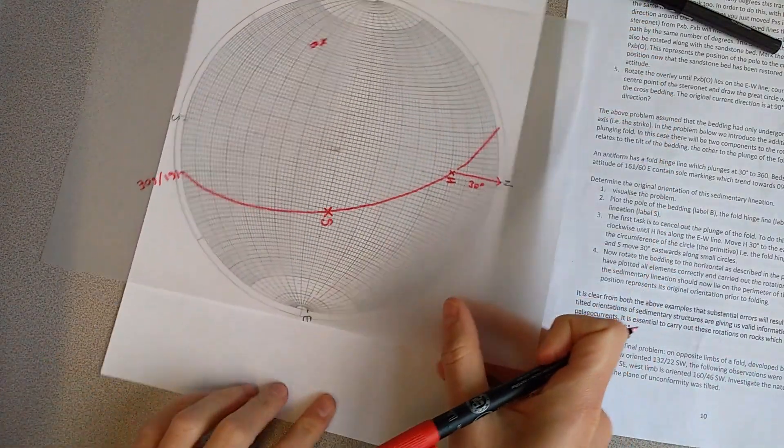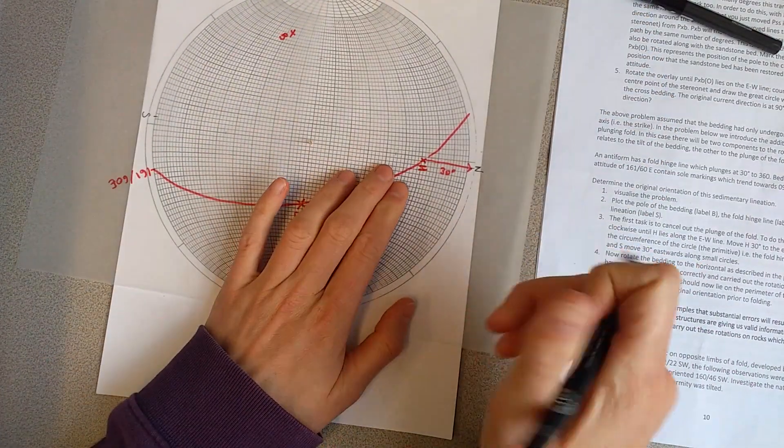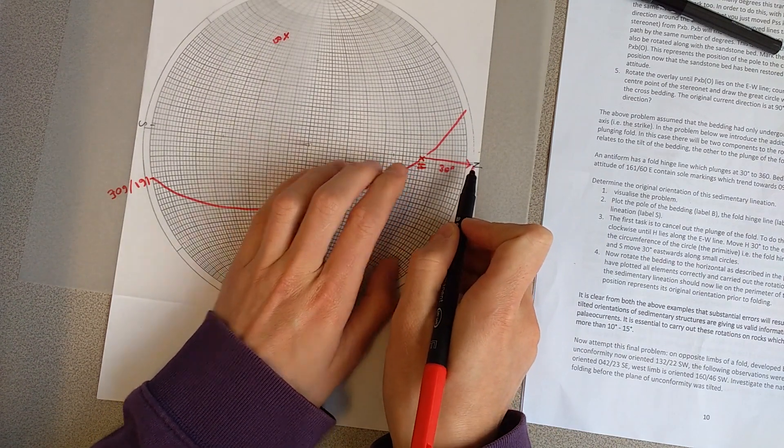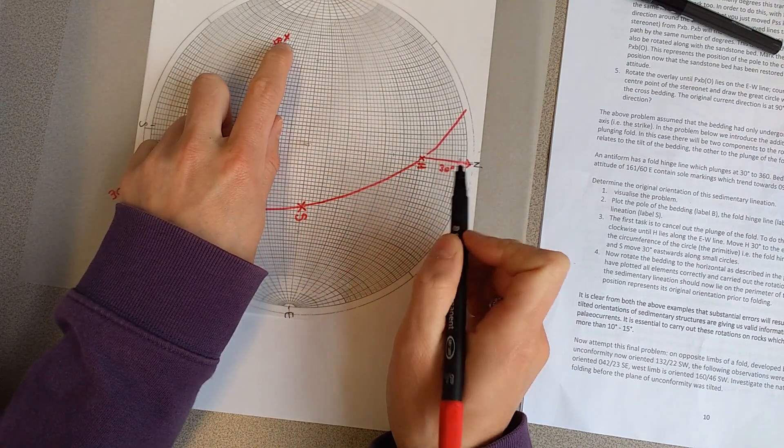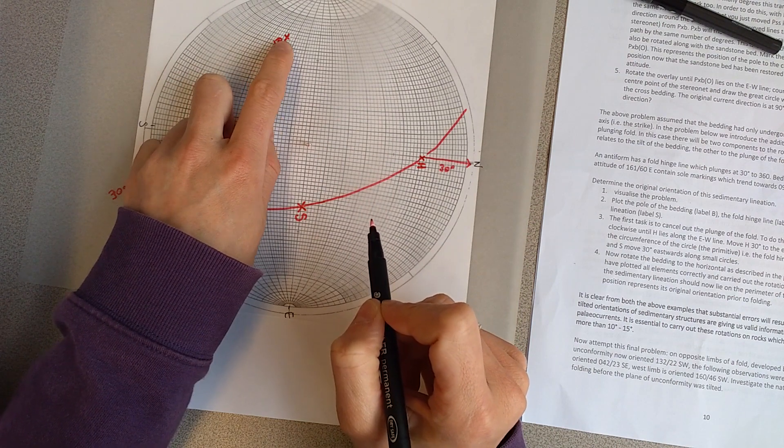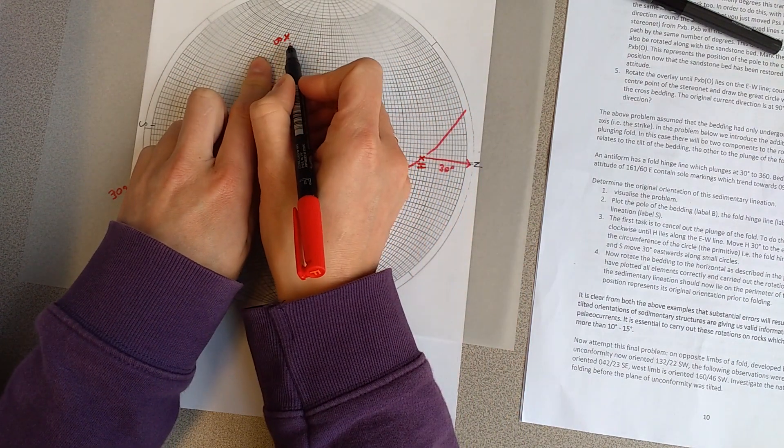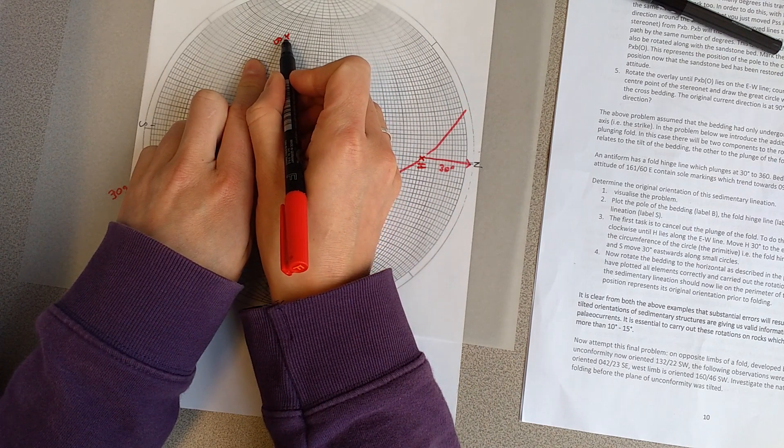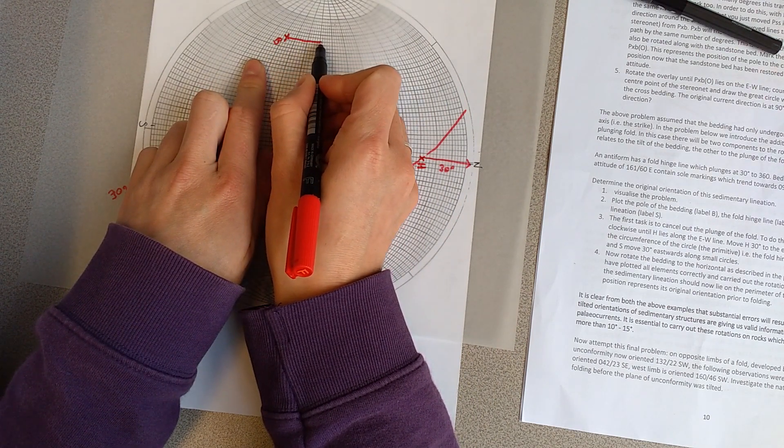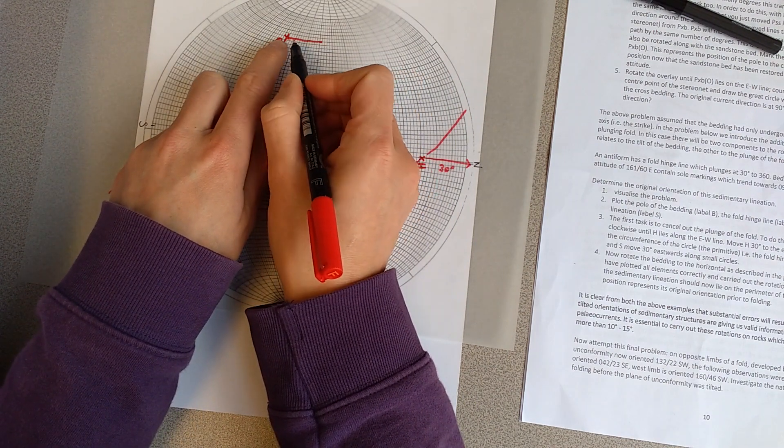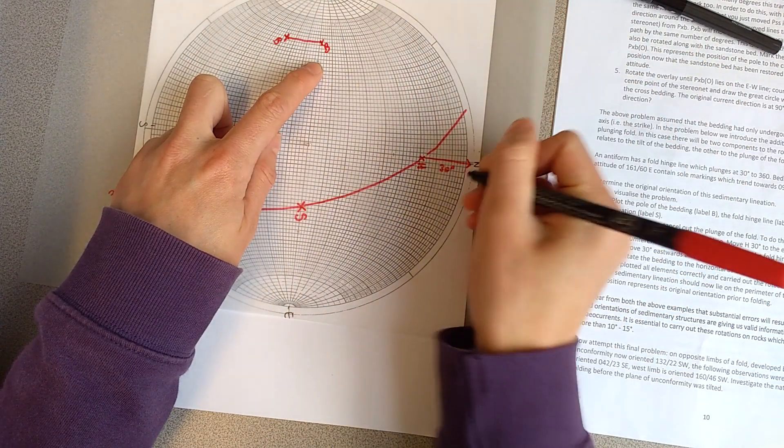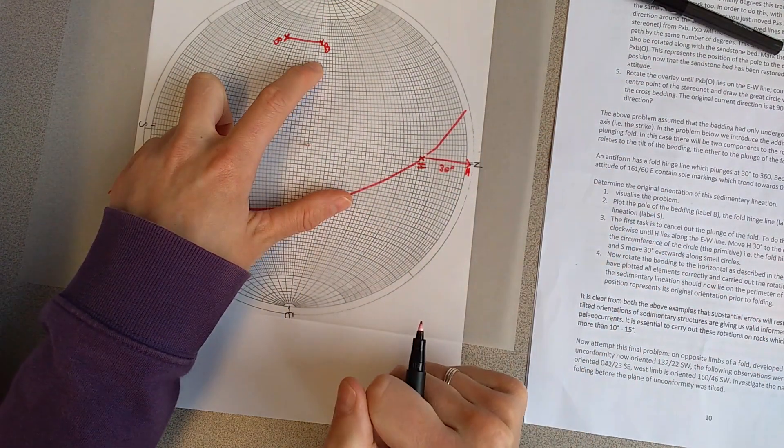So let's just do that. So we did the plane for the bedding, which is there. So if we count 90 degrees the other side, then this is the pole to that bedding. And we need that because when we've just restored, so we're restoring on the east-west line, remember we're going to do exactly the same as what we did before. And we're going to move the pole for the bedding 30 degrees in the same direction along the small circle. So that's going to go to here. So we're going to go here. 10, 20, 30. And that is our new bedding position.